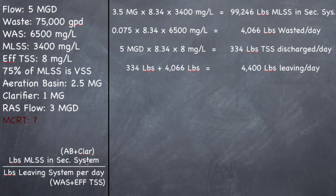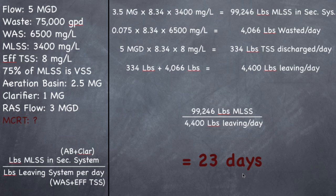Now we have the top part and the bottom part. Let's put them all together. 99,246 pounds of MLSS in your secondary system divided by 4,400 pounds leaving per day should give you an MCRT of 23 days.